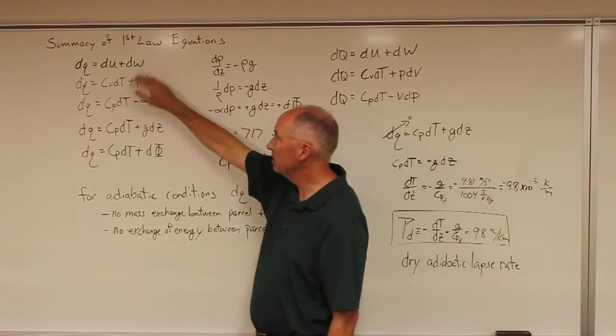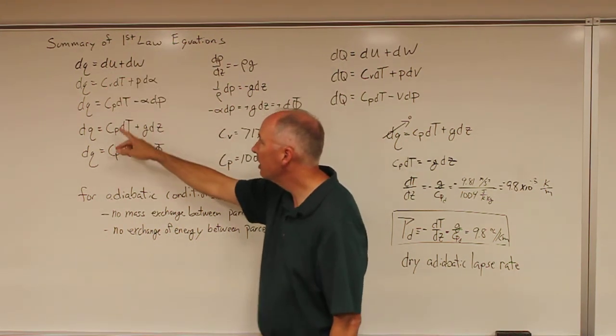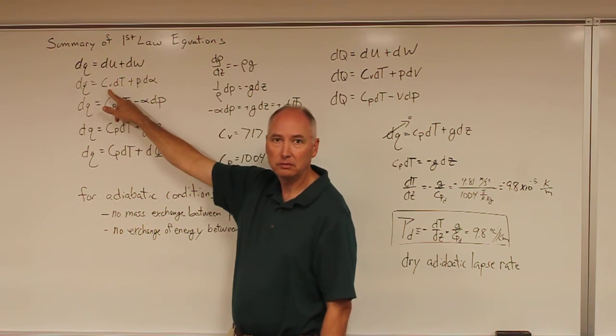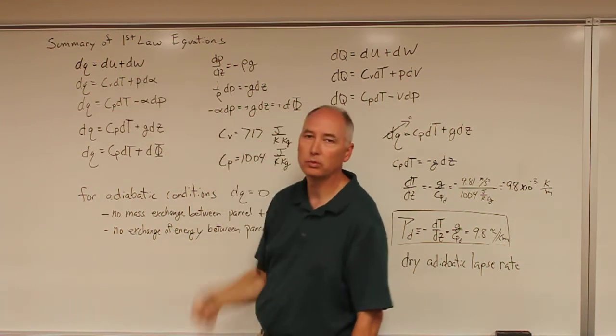So we had dq is equal to the change in the internal energy plus the work done on the system. We determined that the internal energy of the system was c sub d dt and that the work was p d alpha.